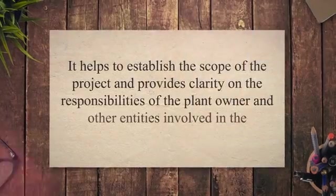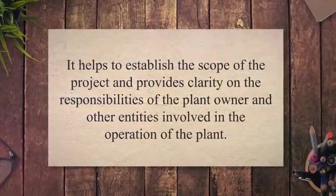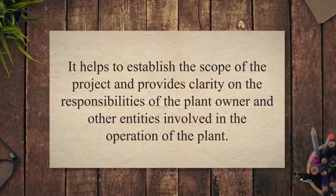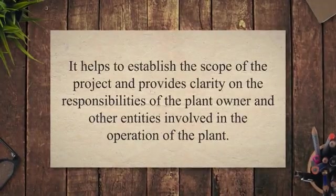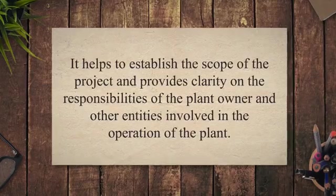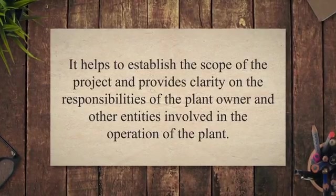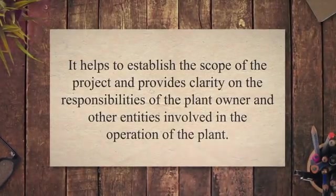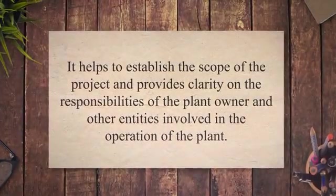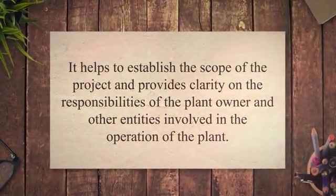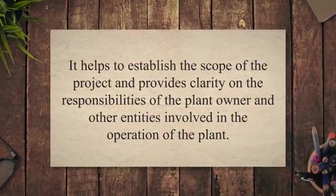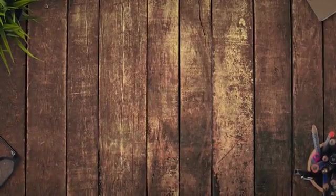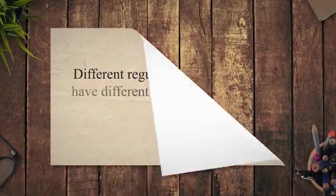First, it defines the scope of the project. The battery limit defines the physical boundaries of the plant and the areas where the primary process equipment and supporting facilities are located. It helps to establish the scope of the project and provides clarity on the responsibilities of the plant owner and other entities involved in the operation of the plant.